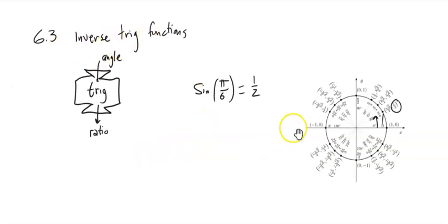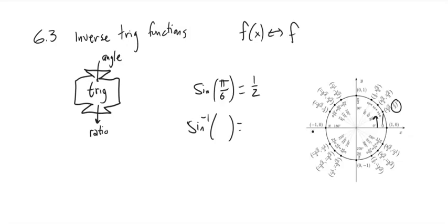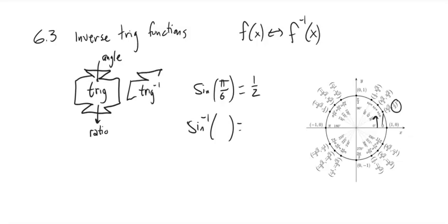What inverse trig functions do — written as inverse sine of something — is they undo the function. It's that function notation: the thing that undoes f is f-inverse of x. That's not to the negative 1 power; it's just notation for inverse functions. What inverse functions do is they input the ratio and output the angle.